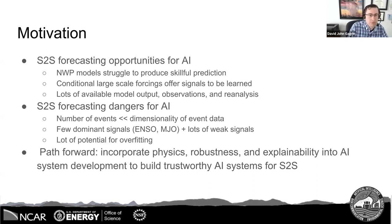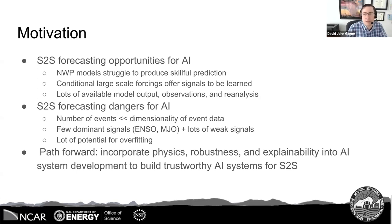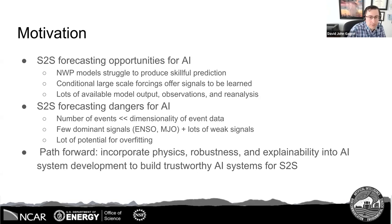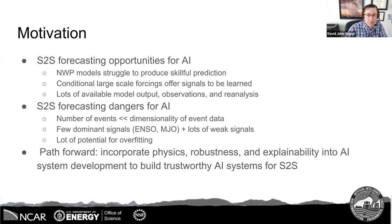There is a lot of data available — lots of observations, model output, climate model output, and reanalysis that we can bring to bear on the problem. But it's also a regime that offers many dangers for effective AI. The biggest problem is that the number of events in our S2S forecasting record is far smaller than the dimensionality of the event data.